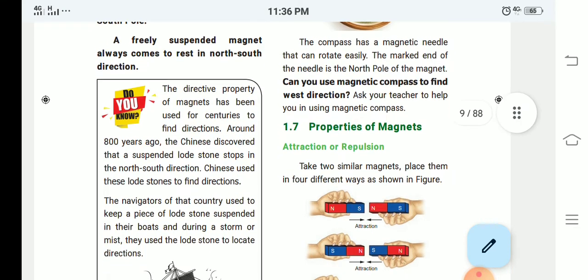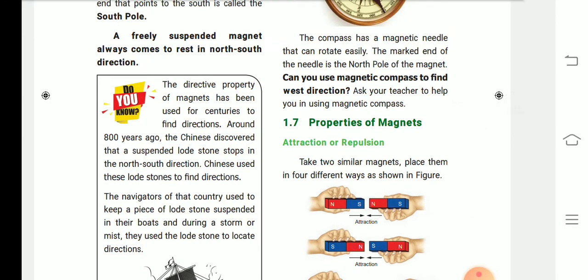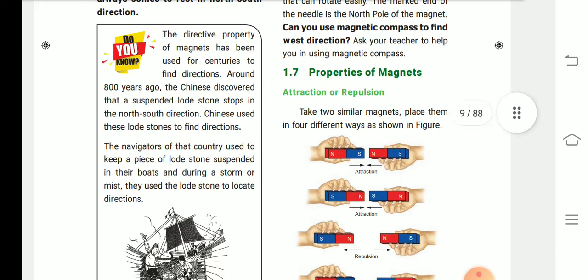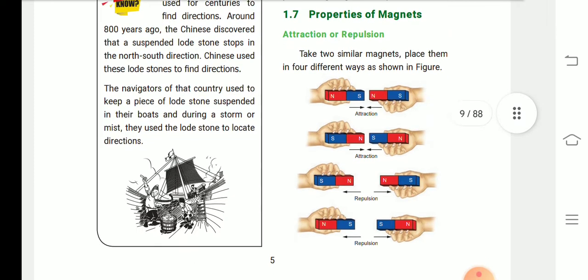Now we see the properties of magnets. The properties of magnets have two. One is attraction or repulsion. Take two similar magnets and place them in four different ways as shown in the figure.